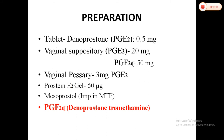Preparations include dinoprostone (PGE2) 0.5 mg tablet, PGE2 20 mg vaginal suppository, PGF2 alpha 50 mg, vaginal pessary 3 mg PGE2, and prostaglandin E2 gel 50 micrograms. Misoprostol is another important drug used, along with dinoprostone tromethamine which is PGF2 alpha.